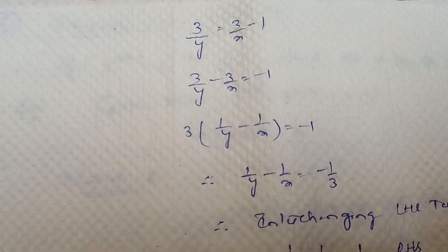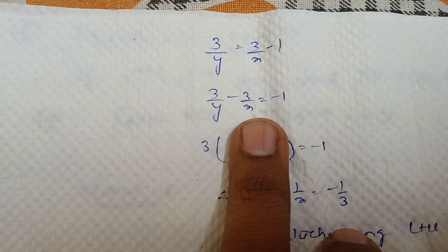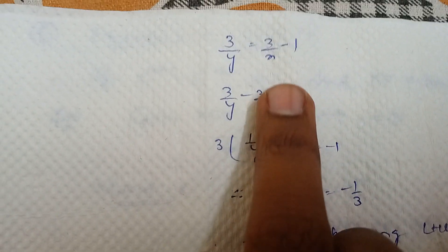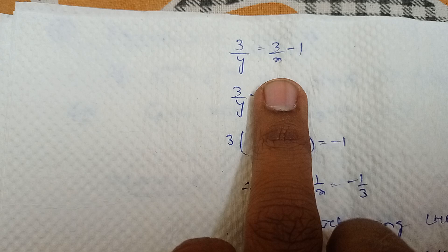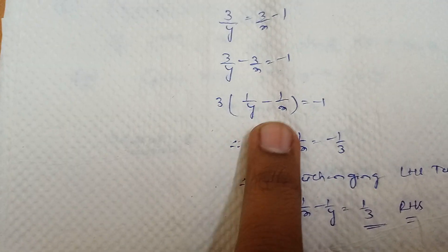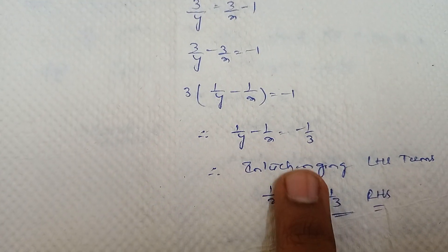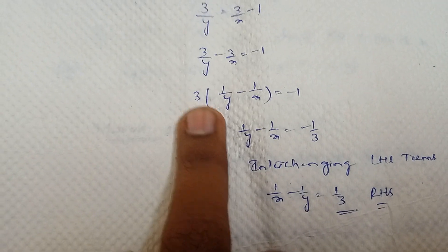So 3 by y equal to 3 by x minus 1. So 3 by y minus 3 by x equal to minus 1. I am sending minus 3 by x to LHS. It becomes minus 3 by x. So we can take 3 common here. It becomes 1 by y minus 1 by x is equal to minus 1. Send 3 to RHS. It becomes by 3. It is a product. It becomes division.